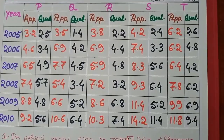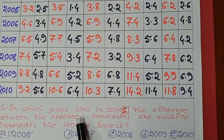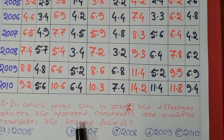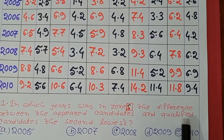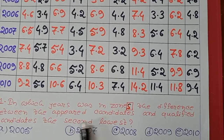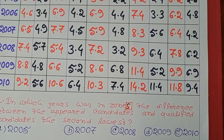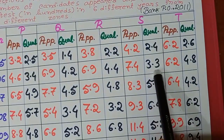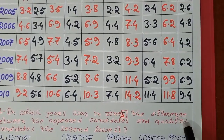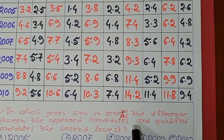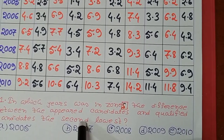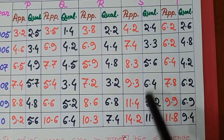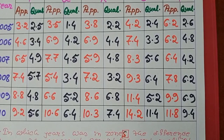First question: in which year was, in zone S, the difference between the appeared candidates and qualified candidates the second lowest? So first we look at zone S. We find the difference between the appeared candidates and the qualified candidates for each year.